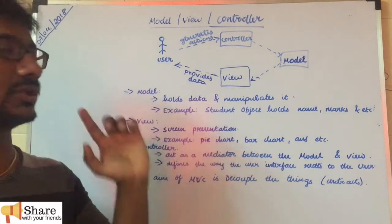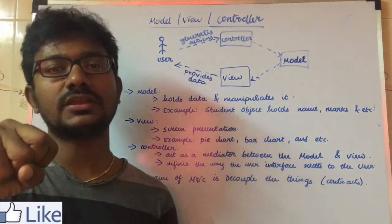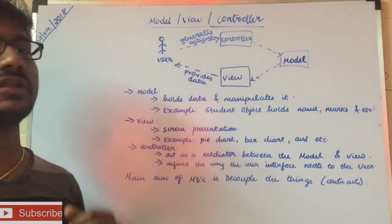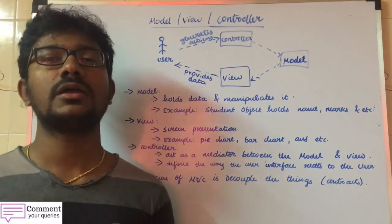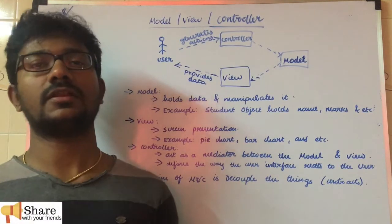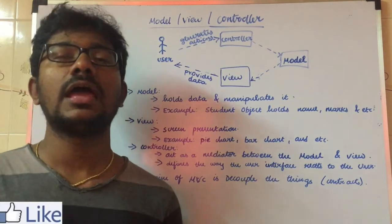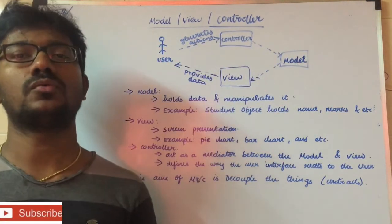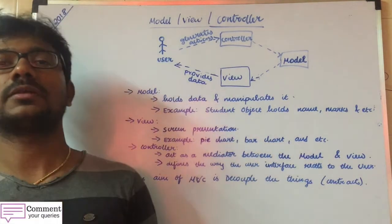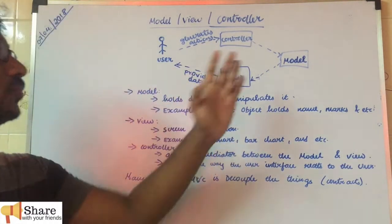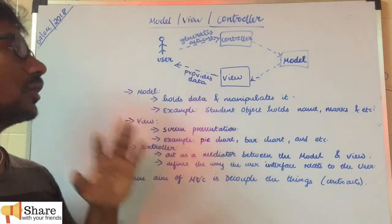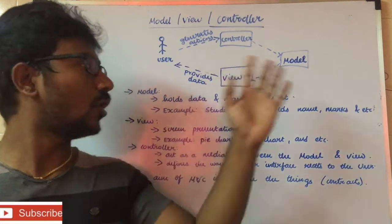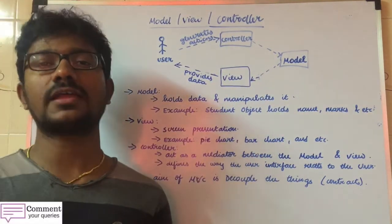If you look at the model, it is the object. I will manipulate it. For example, I have a request from a client to change a phone number. If you look at the data in the controller, the model is updated. That value is the model. In the future, they call it advanced data structures.